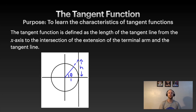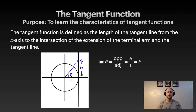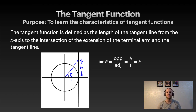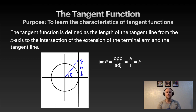So tan θ equals opposite over adjacent. You can make a right triangle where the opposite side is h and the adjacent side is 1, because that's the radius of the unit circle. So h over 1 is h, and that is the tangent value. This is a slightly different diagram than using the x and y value on the unit circle — now we have a point on the tangent line.